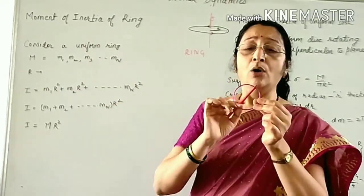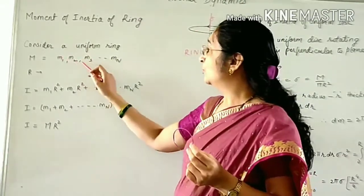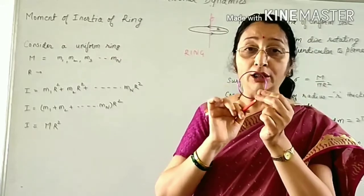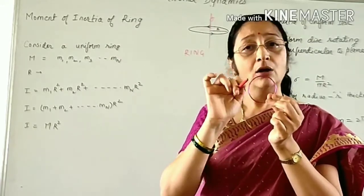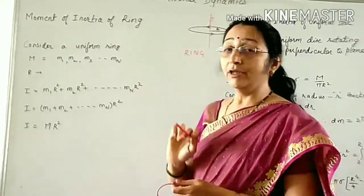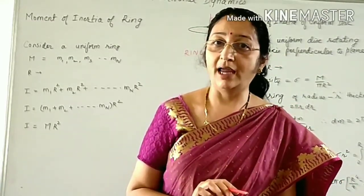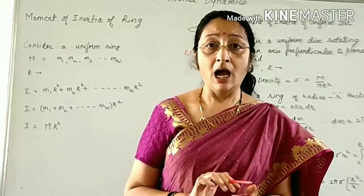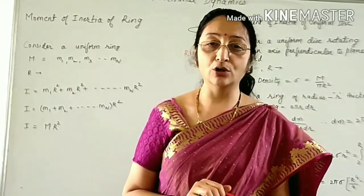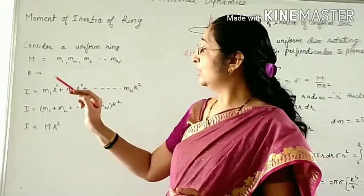Let M1, M2, M3, M4 ... Mn be the n particles on the circumference of the ring. We know that the moment of inertia I is given by I = M1·R1² + M2·R2² + ... + Mn·Rn².